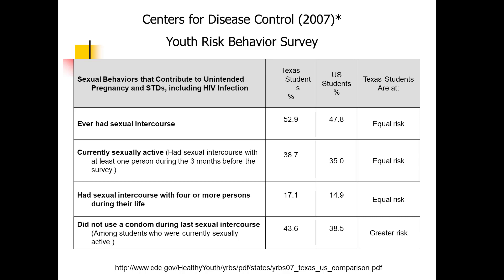This is data from the Center for Disease Control in 2007. The reason it hasn't been updated is because Texas has not collected the information. But in 2007, Texas students had 52.9% ever had sexual intercourse, which is higher than the more recent national number. In the U.S., it was 47.8% ever had sexual intercourse. Having had intercourse with at least one person during the three months prior to the survey was not statistically significantly different between Texas students and U.S. students. The same is essentially true for having had intercourse with four or more persons during their life.